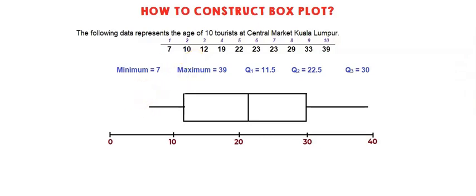Now you put the labels. Here is the minimum value, which is 7. This vertical line represents Q1 which is 11.5. Here is the vertical line for Q2 which is 22.5. This vertical line is Q3 which is 30. And here is the maximum value, 39.